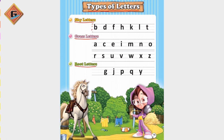Which letters do we call the first three lines? The first line is where letters start and end. Those letters that start from the first line and end at the third line, we call sky letters.